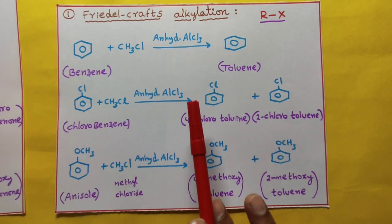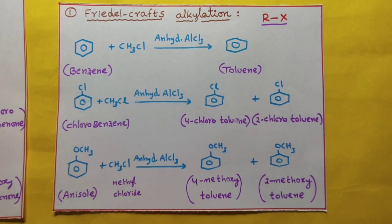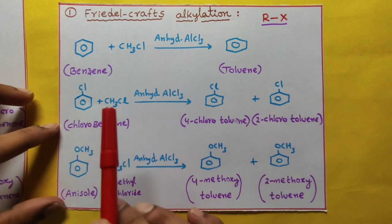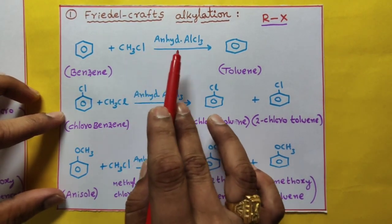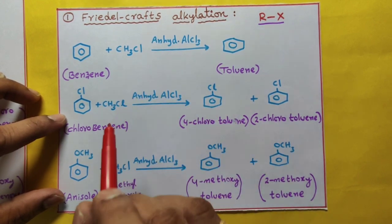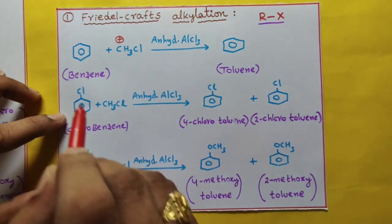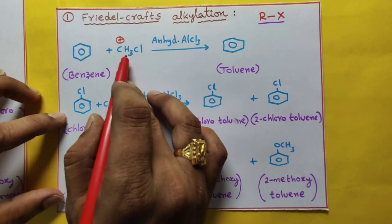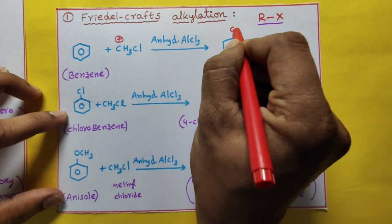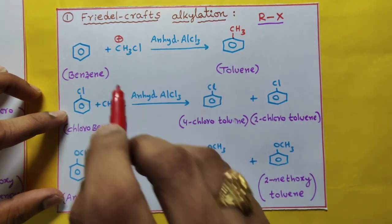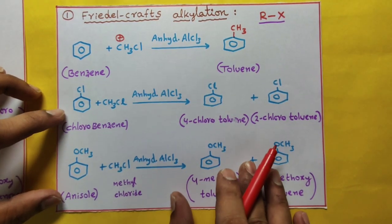Let us discuss one by one. During learning we have to compare and learn, then we can easily remember these 6 reactions. Benzene reacts with methyl chloride in presence of anhydrous AlCl3. In this reaction, CH3+ is the electrophile. Here hydrogen is replaced by CH3. Then write CH3 — H+ is replaced by CH3. What is the name? Toluene. Benzene with CH3 is called toluene.